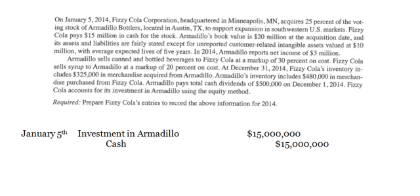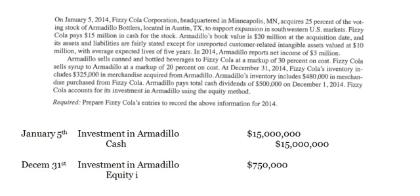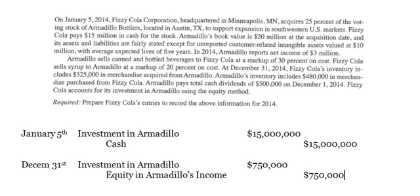Let's take care of the basics. At the end of that first paragraph, it says Armadillo had net income of $3 million, so we want to report our 25% of that, which would be $750,000. We're going to debit Investment in Armadillo for $750,000. The logic is: if Armadillo is reporting income, they're getting larger, therefore our 25% ownership should be getting larger. Our credit will be to Equity in Armadillo's Income. That's an income statement account for us, while Investment in Armadillo is an asset on the balance sheet.